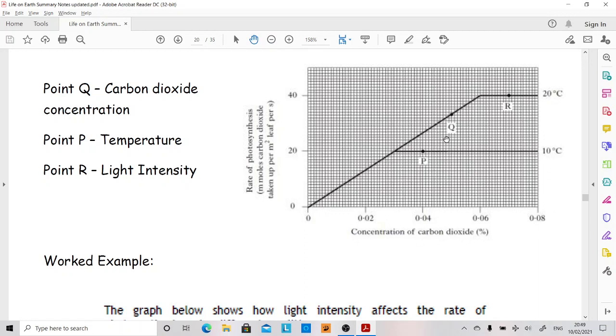If we want to look at what is the limiting factor at P, we might want to see what was making it be better up here. So it's kind of a spot the difference. What's the difference between these two? Well, this one's at a lower temperature and that one's at a higher temperature, and at a higher temperature it's working better. So that makes us think limiting factor down at P must be temperature.